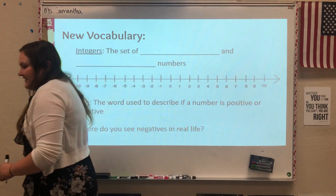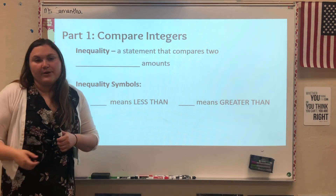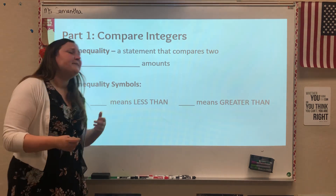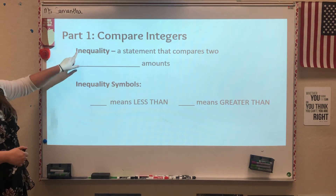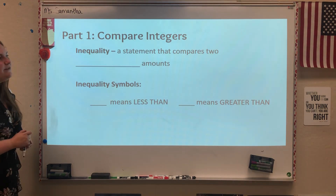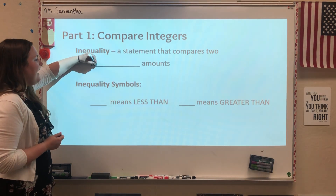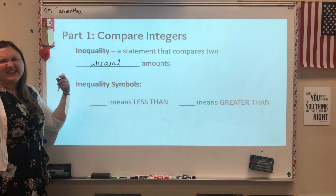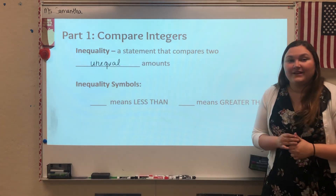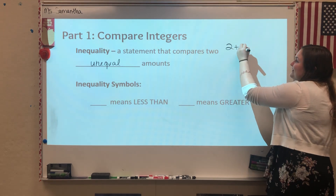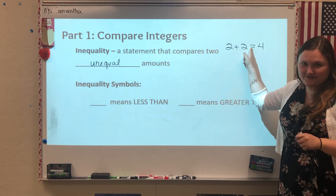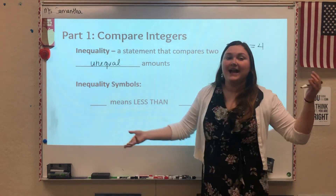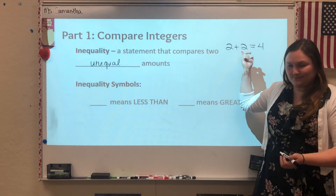One of the first things we're going to do in this lesson, just to help us familiarize ourselves more with integers, is this idea of comparing them — which one's more, which one's less. When you compare numbers, we usually use something called an inequality. Inequalities are statements that compare two unequal amounts. It's called an inequality because it's unequal. Yesterday we were talking a lot about equations — an equation could be something like two plus two equals four. Equations use equal signs to show that the two sides are equal. When you're talking about an inequality, something is unequal, so we can't use an equal sign.